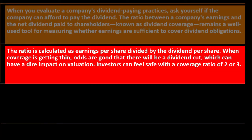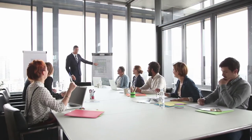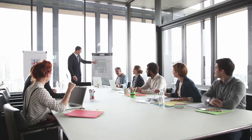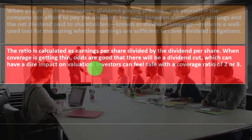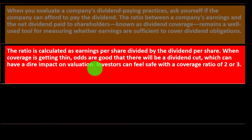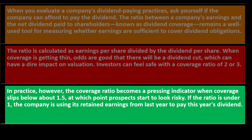The dividend coverage ratio is calculated as earnings per share divided by the dividend per share. When coverage is getting thin, the odds are good there will be a dividend cut, which can have a dire impact on valuation. Investors can generally feel safe with a coverage ratio of two or three. However, the ratio becomes a pressing indicator when coverage slips below about 1.5, at which point prospects start to look risky. If the ratio is under one, the company is using retained earnings from prior years to pay this year's dividends.